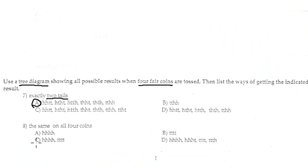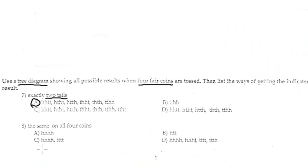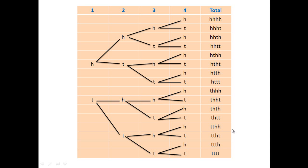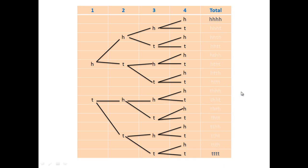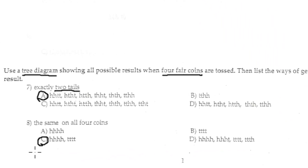Number 8: with 4 coins, we want the case where all coins show the same value — either all heads or all tails. There are only 2 such combinations out of 16. The final answer is option C.